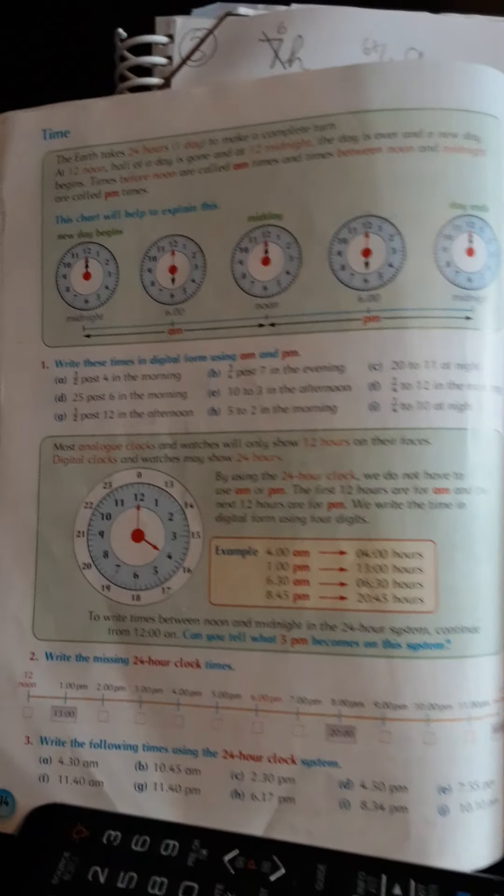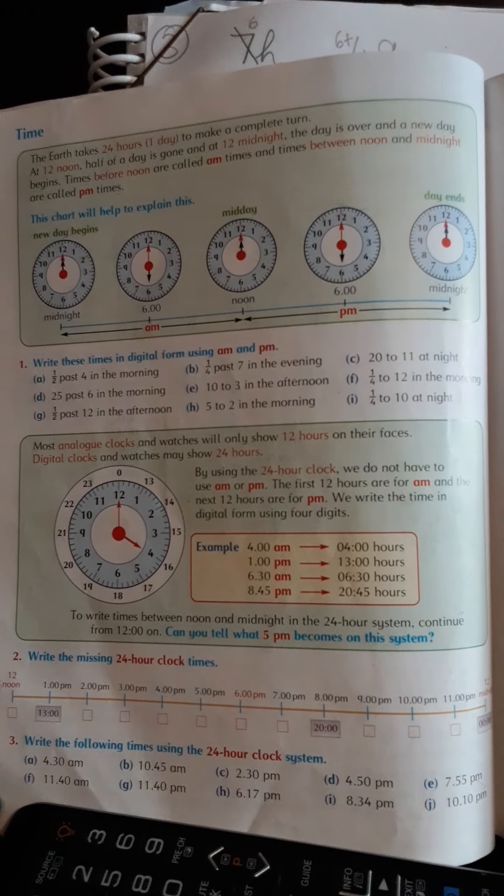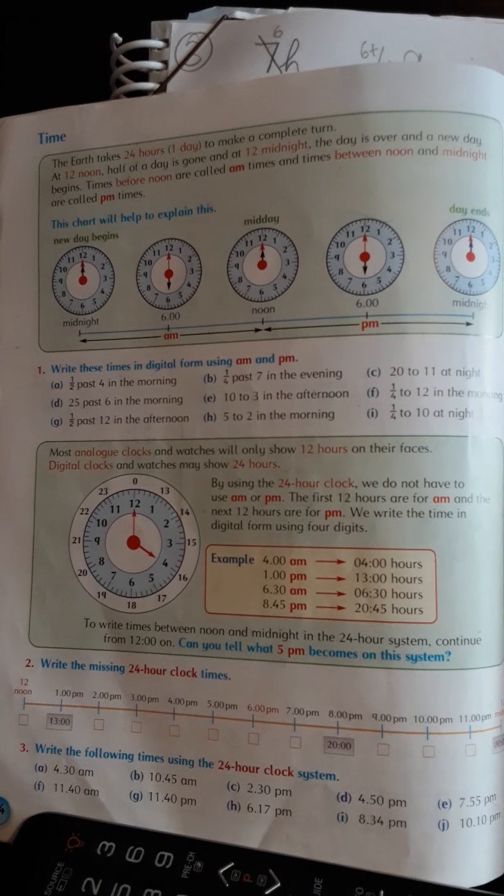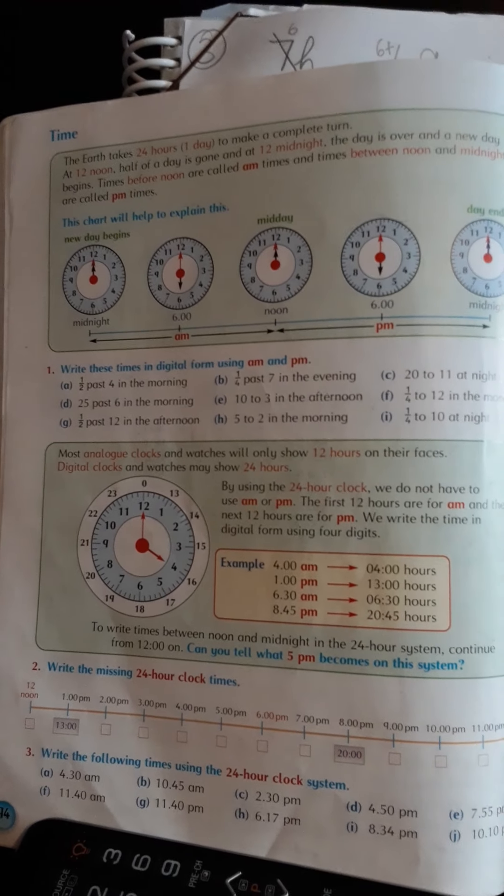Then moving on down, it says write the missing 24-hour clock times. So we've done this before. In order to figure out a 24-hour clock, simply take a look at the time and add 12.